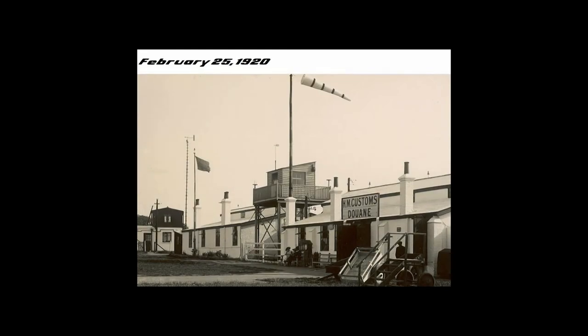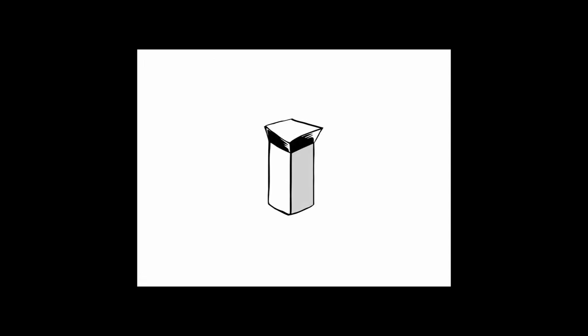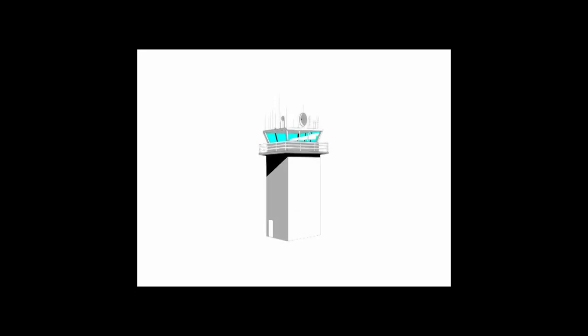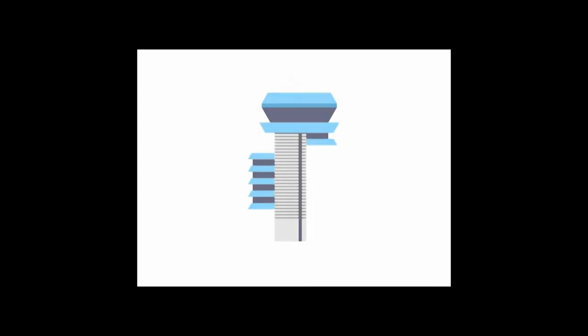To recap: the first airdrome control tower was commissioned on February 25th, 1920 — a very simple structure. As time went by, the needs of the airdrome control tower changed, and that has dictated how the control tower looks today. Here we have a few variations on what we've seen over the years — the appearance of the control tower is dictated by its function.